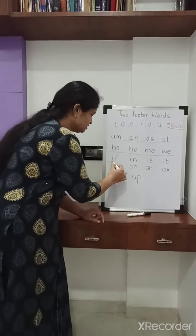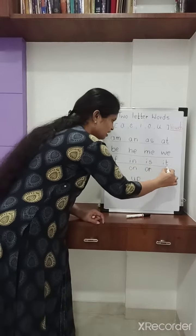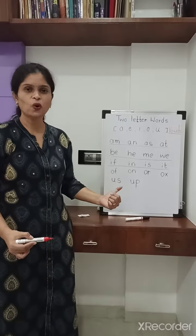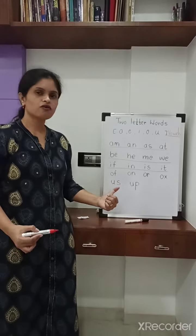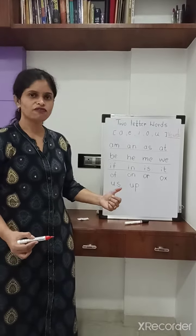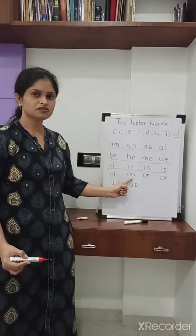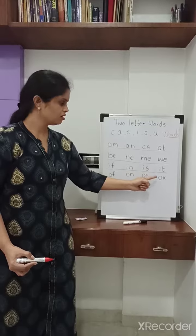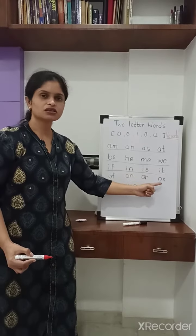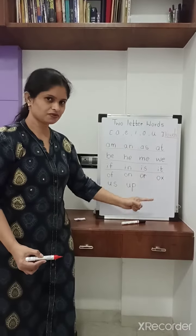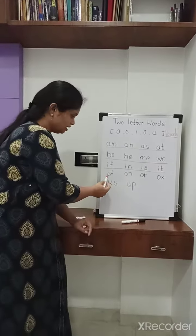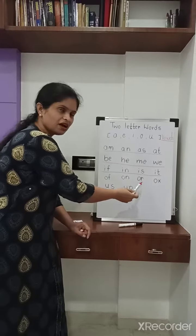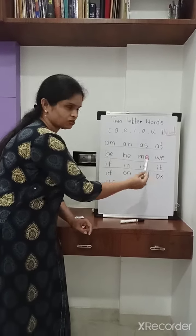So we have done with the I words. Now we will move to letter O. OF, OF. OR, OR. OX, OX. Again: OF, OR, OX.